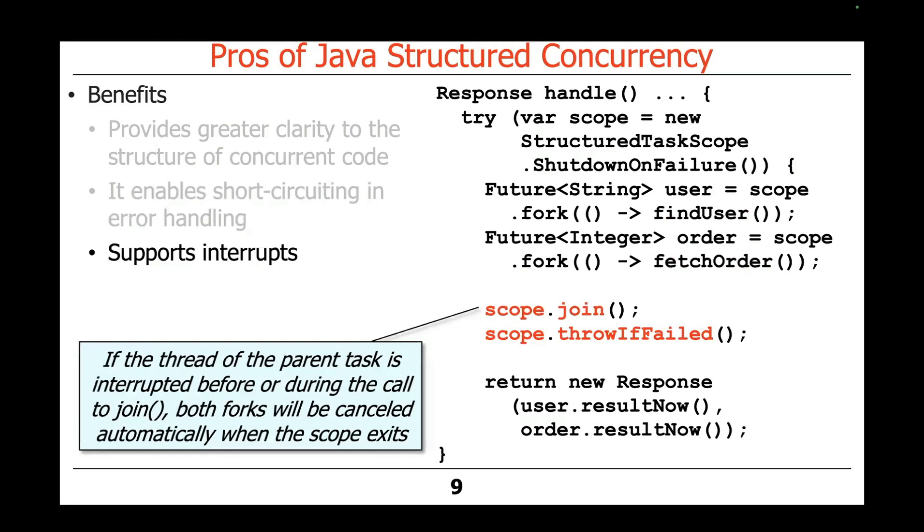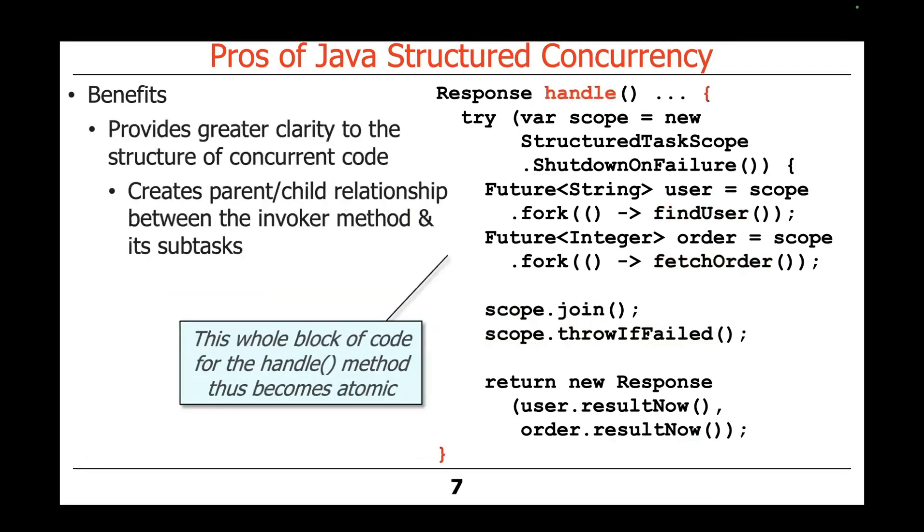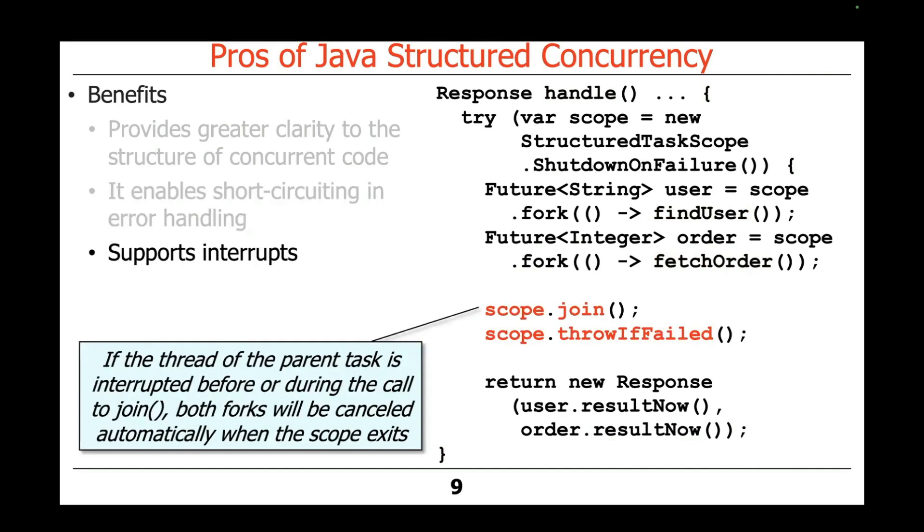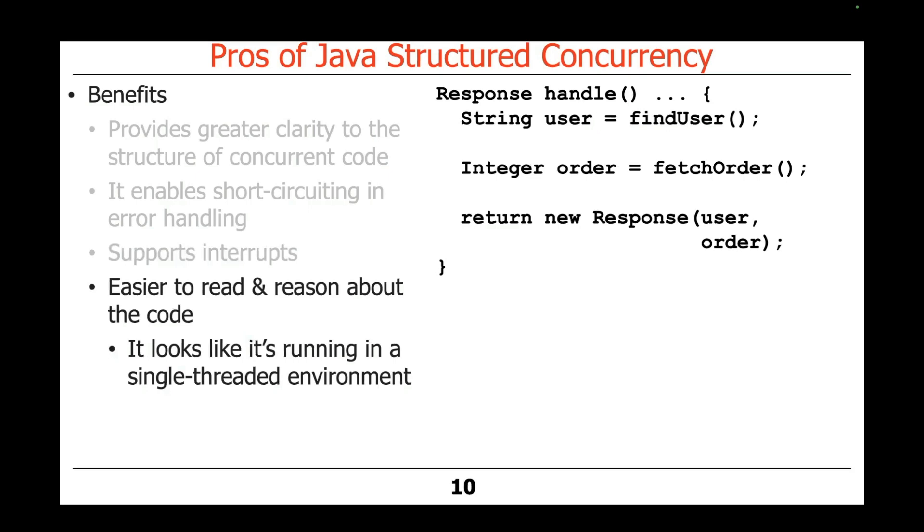Another nice thing that happens here is if the parent task is interrupted, either before doing the calls or during the call to join, the fork calls that we made before, these two there, they will be canceled, and we're going to exit and throw an exception without having to do anything else explicit. So interrupts and exception handling is dealt with nicely.